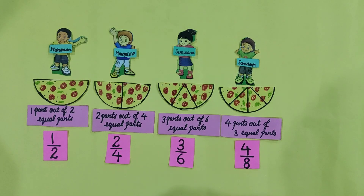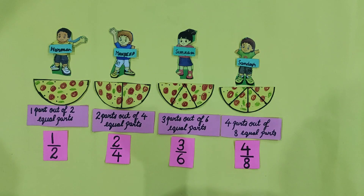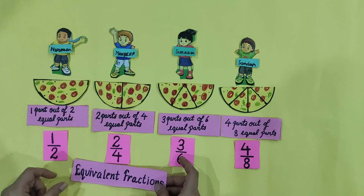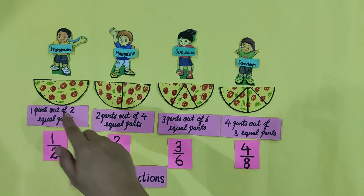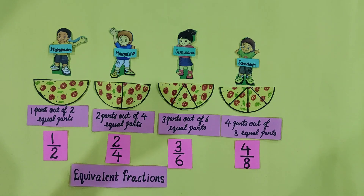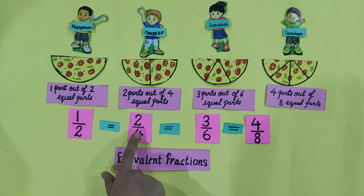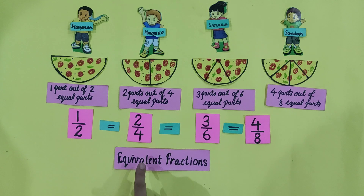Students, you saw each one had divided the pizza into different slices and also ate different slices of the pizza. But even though they had eaten the same part of the pizza. The different fractions which describe the same part of the whole are known as equivalent fractions. 1 by 2, 2 by 4, 3 by 6, and 4 by 8 are equivalent fractions because they describe the same part of the whole. We can also write it as 1 by 2 is equal to 2 by 4 is equal to 3 by 6 is equal to 4 by 8. These are equivalent fractions.